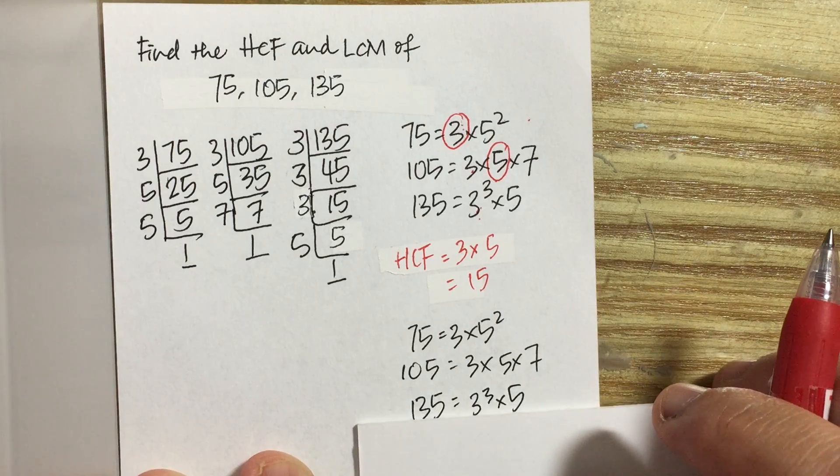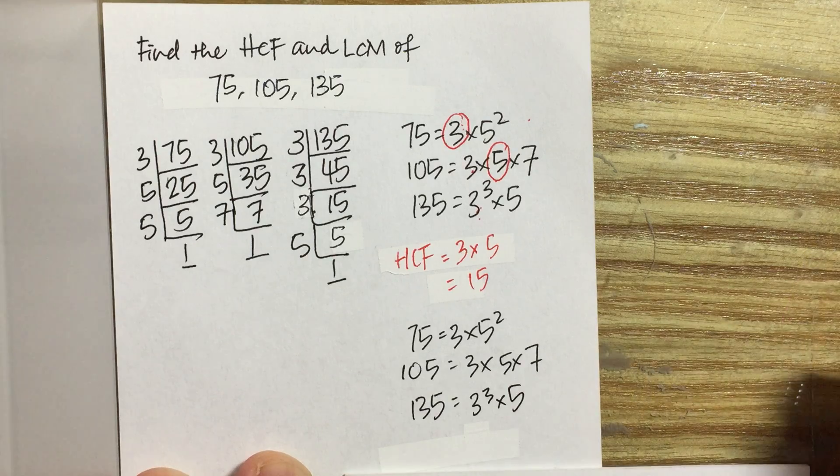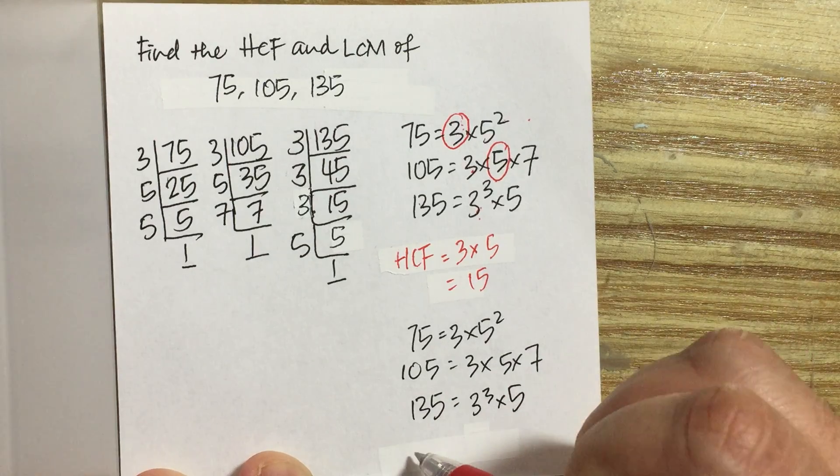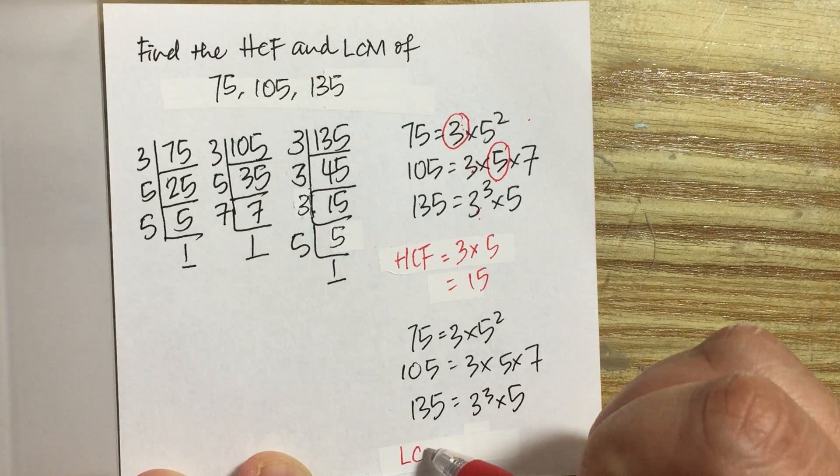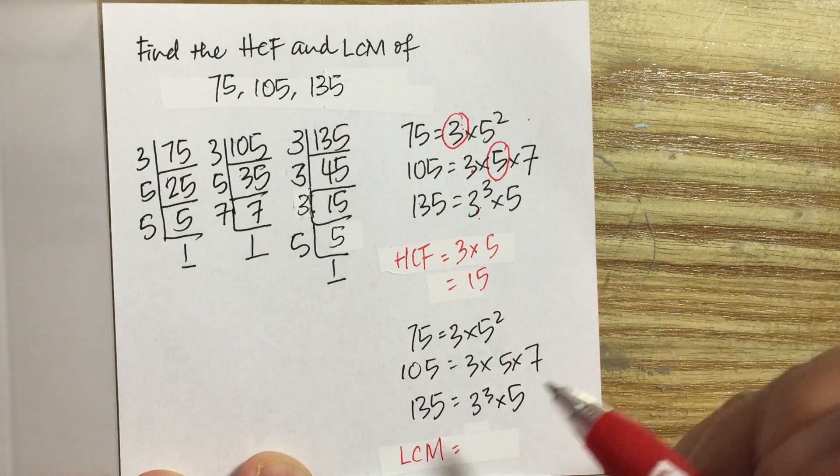Next, for LCM, lowest common multiple, the more factors the merrier. But since we want the lowest common multiple, we pick the factor with the highest power.